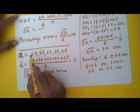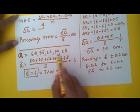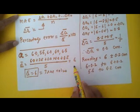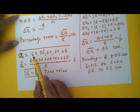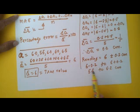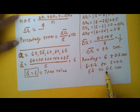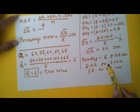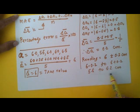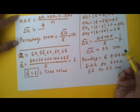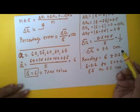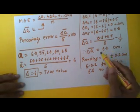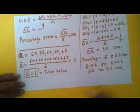What this means is that we have taken the readings, the average value comes out to be 6, and the error is 0.2. The value or length of this particular bar could be anywhere between 5.8 to 6.2 centimeters. Its mean value is 6, but the actual value could hover between these two values. With this, I think you have got a fair idea of what mean absolute error is and its real-life applications. Thank you.